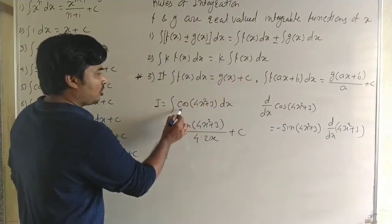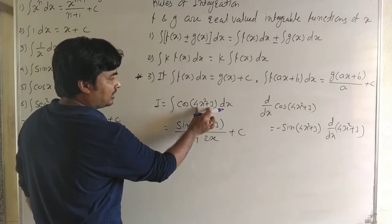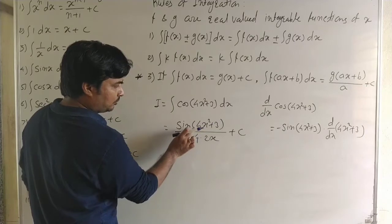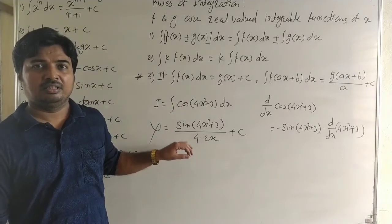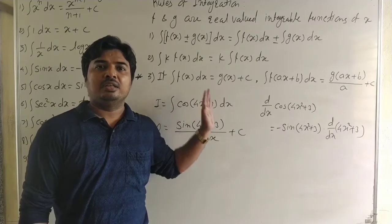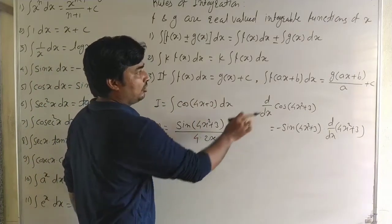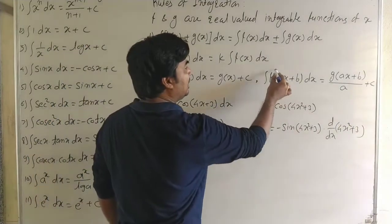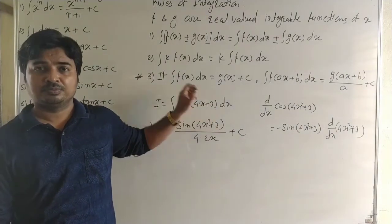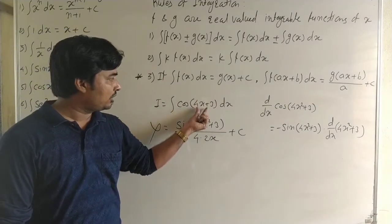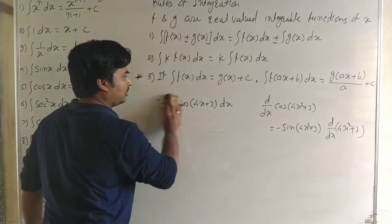For example, cos(4x² + 3): writing sin(4x² + 3) divided by the derivative of (4x² + 3), which is 8x, would be wrong. This formula does not apply because 4x² + 3 is not linear. For non-linear composite functions, we must use the method of substitution. This rule is valid only when x is replaced by a linear function ax + b.